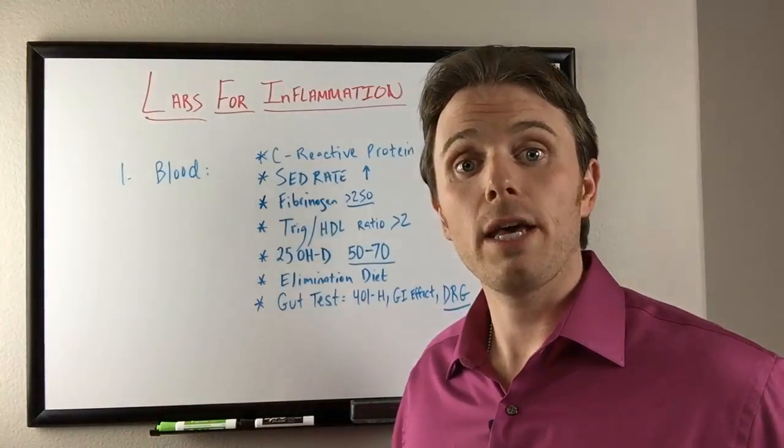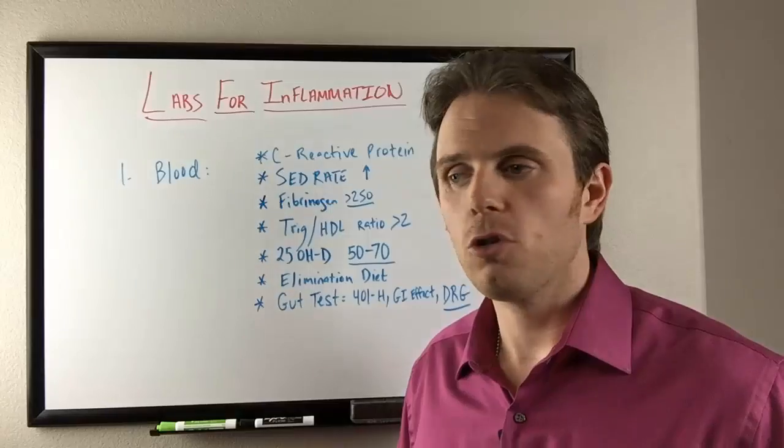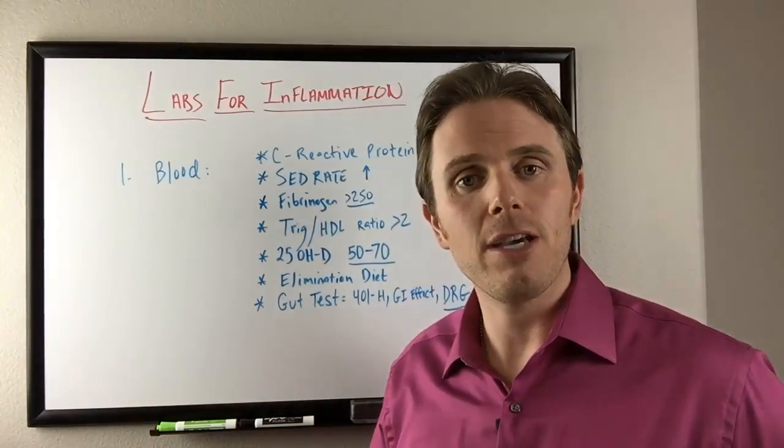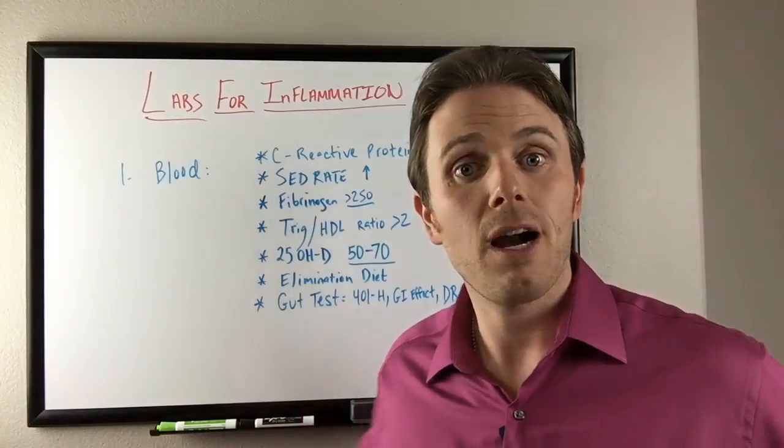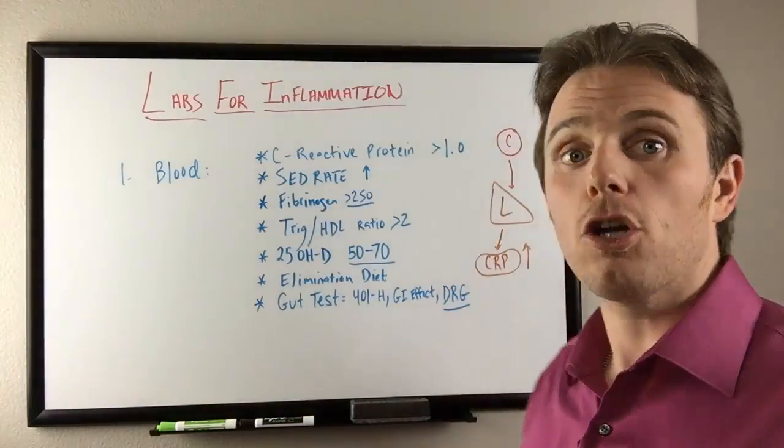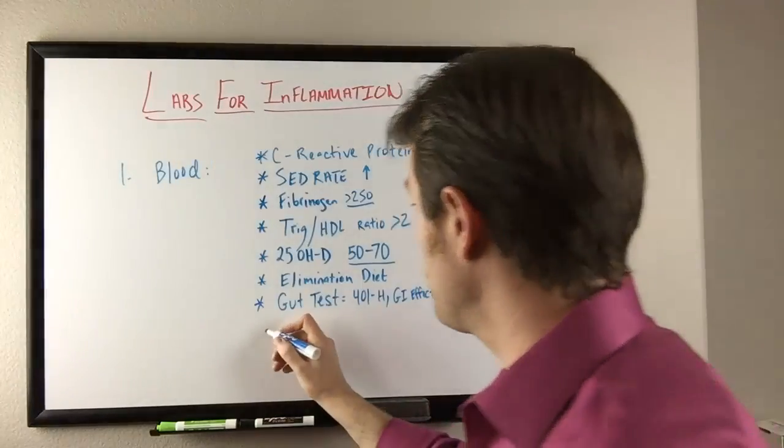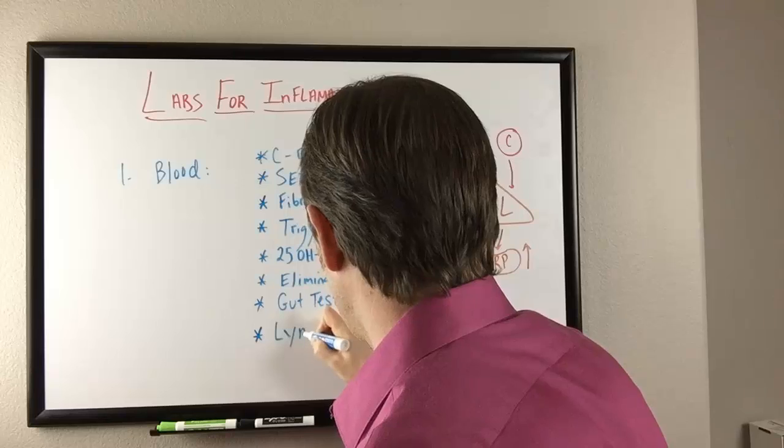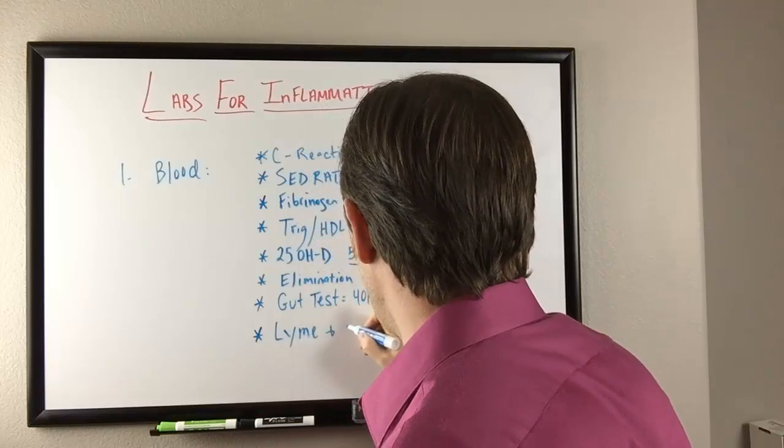Next, running a chronic co-infection panel. If you still have symptoms and we've ruled all these things out and the inflammation is still, nothing's coming back on the lab work, we may want to look a little bit deeper at co-infection or Lyme testing. We want to look for Lyme and co-infections.